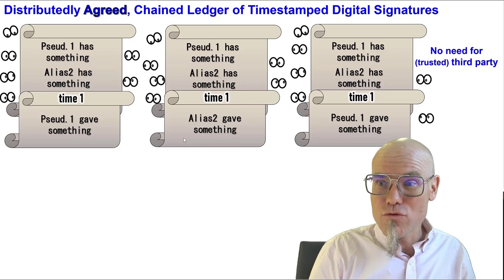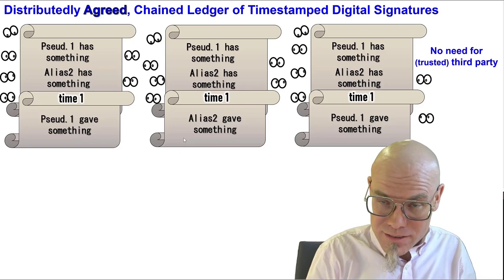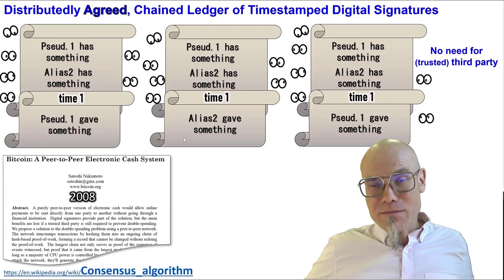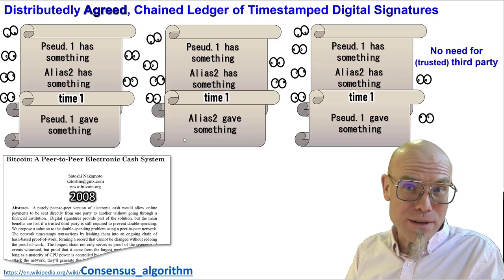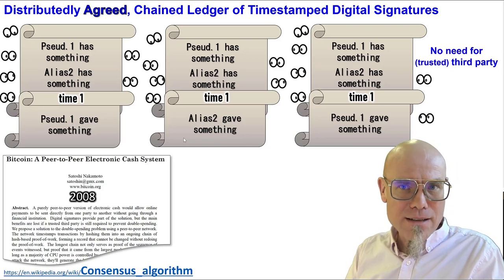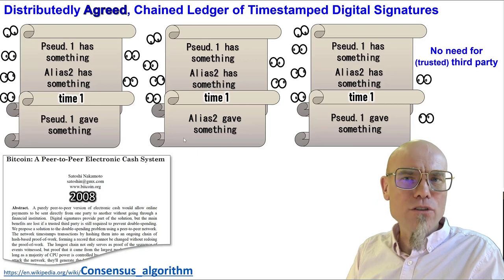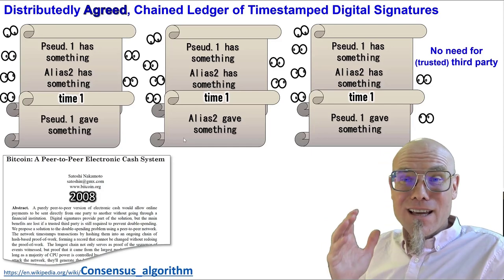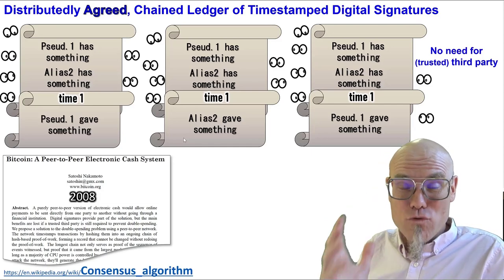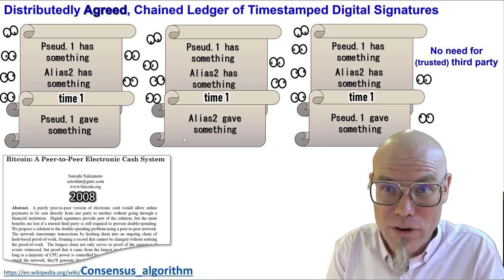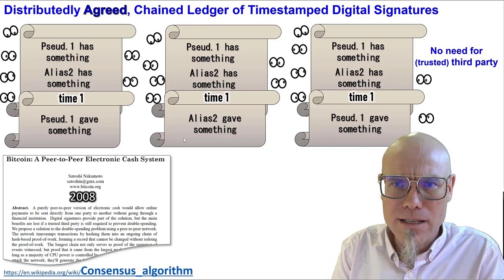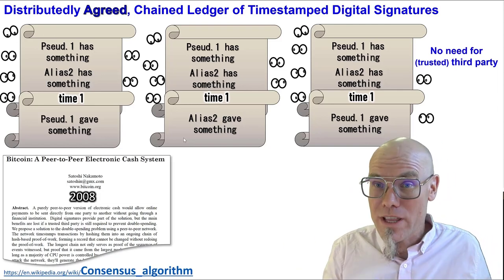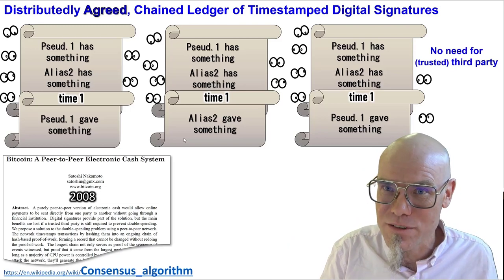So how do we agree on writing the next block on the blockchain? That is where the famous Bitcoin paper comes in — Satoshi Nakamoto, the first modern application. And what this paper basically solved is the consensus algorithm: how do we put ourselves in agreement of putting something else next on the blockchain? There are as many ways we can agree on something as there are ways to disagree, and hence there are many different consensus algorithms out there.